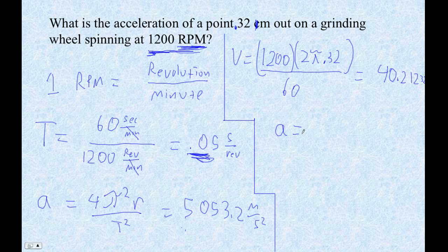And then I'm going to say A is V squared over R. Okay, so I'm going to square the number I've got in my calculator divided by 0.32 and I get exactly the same number, 5,053.23 or whatever meters per second squared.